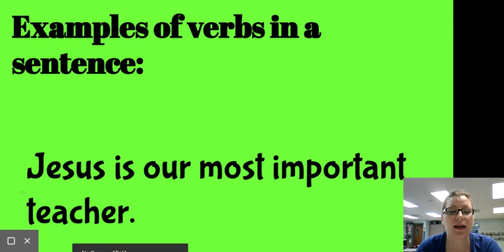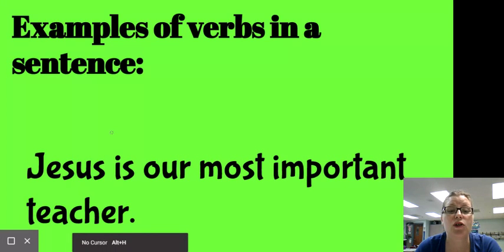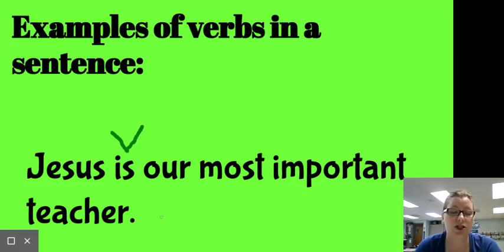And this specific verb is showing a state of being. So it would be a linking verb. But right now, we're just studying regular old verbs. We're going to mark it with a V. But later on, in the later pattern, we're going to label it as a linking verb. So keep that in mind.